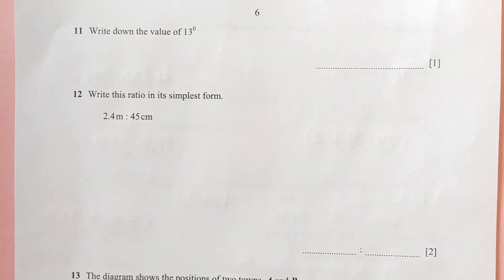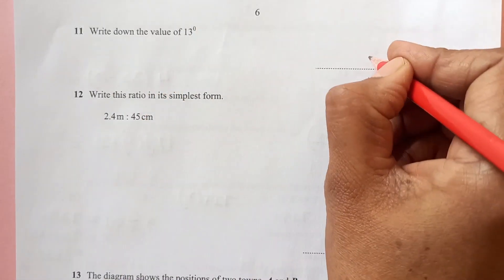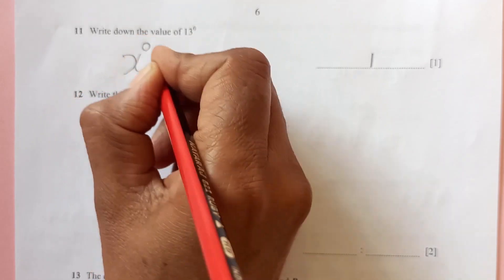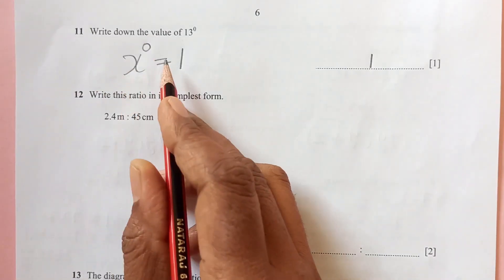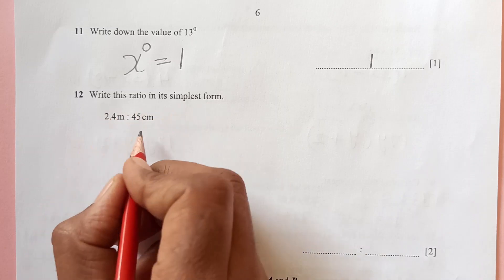Question number 11: write down the value of 13 to the power 0. This will be 1 because anything raised to power 0 is 1. x raised to power 0 is 1.